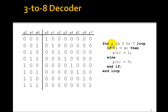So we can say for i in 0 to 7 loop, go through all of the outputs y. If i is equal to a, that is if 3 is equal to the input 3, then y(i) equals 1, else y(i) equals 0. So this for loop should produce this 3-to-8 decoder.